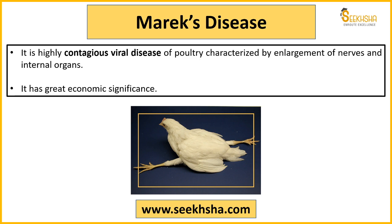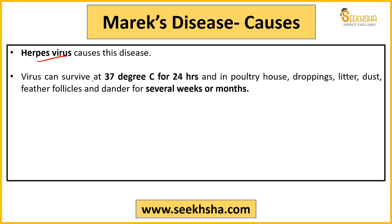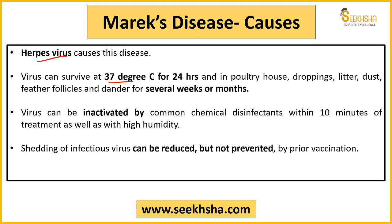Marek's disease is a viral infection and is contagious — meaning it spreads. If once this disease enters a poultry farm, any one particular hen or chicken gets affected, it will ultimately spread, which is its biggest problem and causes huge losses. It is caused by a herpes virus. This virus can survive even at 37°C temperature and can survive for weeks and months on poultry house droppings and litter. It can be inactivated using chemical disinfectants and high humidity.